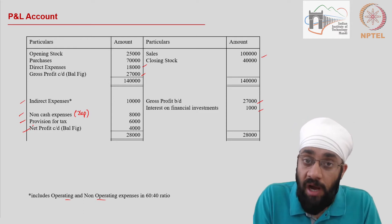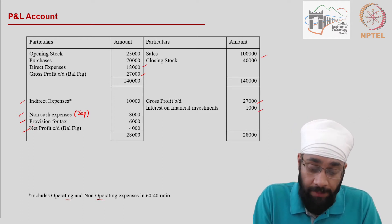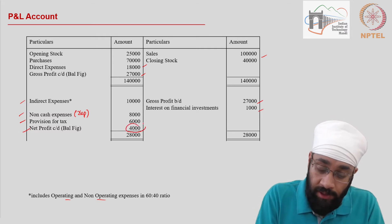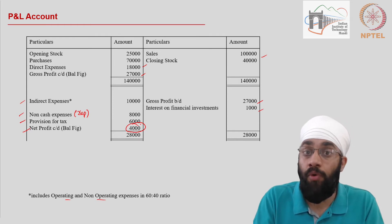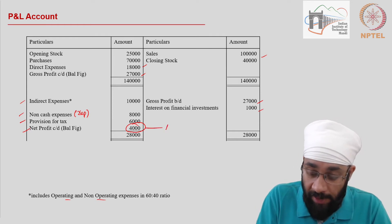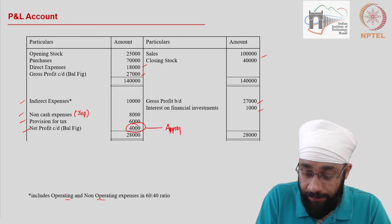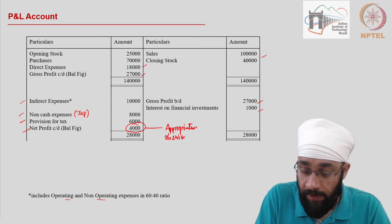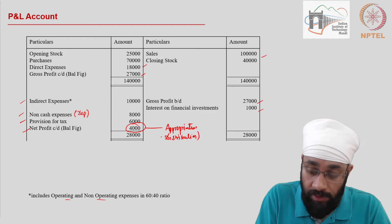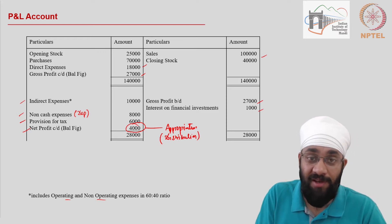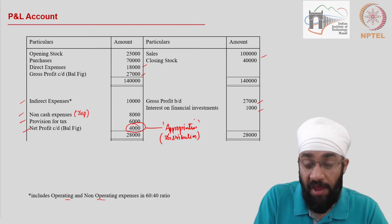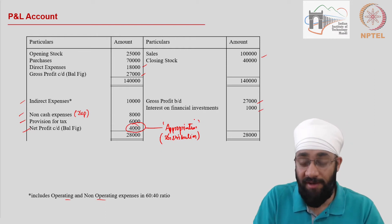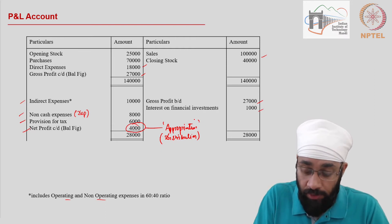What happens after this? This profit needs to be distributed — it needs to be appropriated. Appropriation essentially refers to distribution. Misappropriation is a more popular term, but this is the right kind of appropriation that needs to be done.